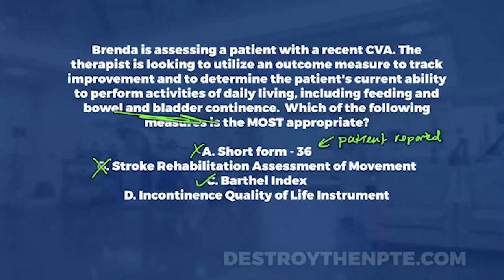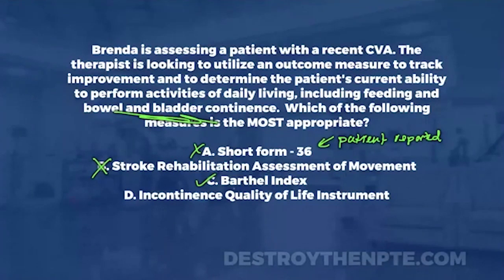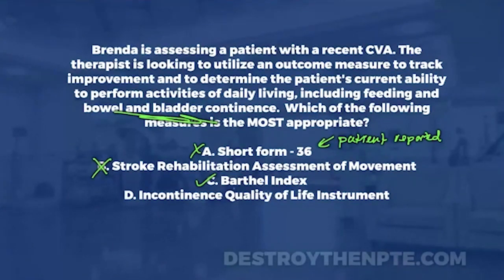Option D is the Incontinence Quality of Life Instrument. This is a patient-reported outcome measure — a short questionnaire taking about five to ten minutes — where the patient fills it out about psychosocial impacts, social embarrassment related to incontinence, and limiting behaviors related to incontinence. D is a patient-reported quality of life instrument; it is not functionally based. It doesn't address ADLs, it doesn't address feeding, and it's not a functional outcome measure. So I eliminate D.